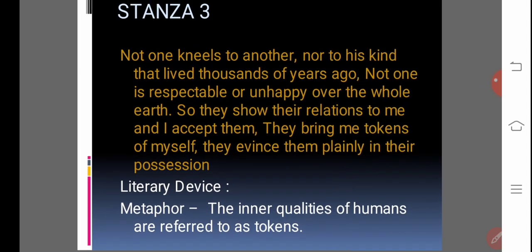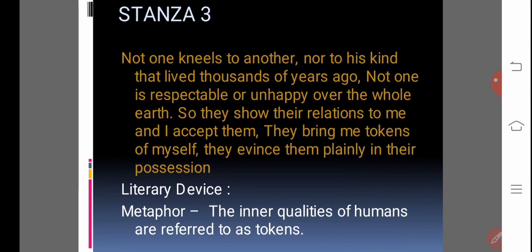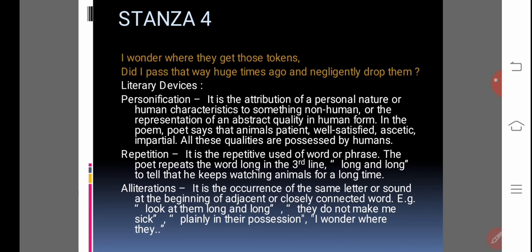We will go and see the third stanza. Not one kneels to another, nor to his kind that lived thousands of years ago. Not one is respectable or unhappy over the whole earth. They show their relations to me and I accept them. They bring me tokens of myself. They evince them plainly in their possession. The literary device you can see here, metaphor is used. The inner qualities of humans are referred to as tokens.